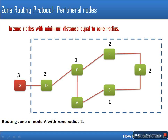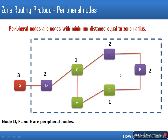There is one more definition: peripheral nodes. When we define a zone for a node, peripheral nodes are those nodes with distance equal to the zone radius. Node D has distance 2, node F has distance 2, and node E also has distance 2 — so these three nodes are known as peripheral nodes.